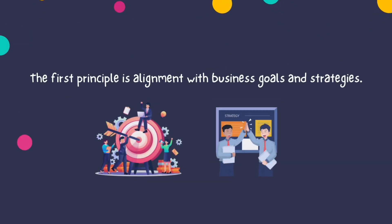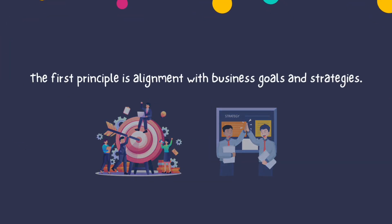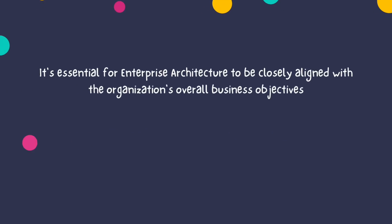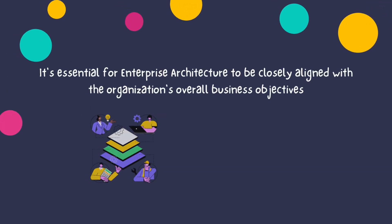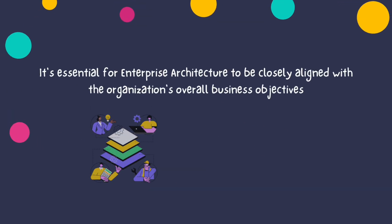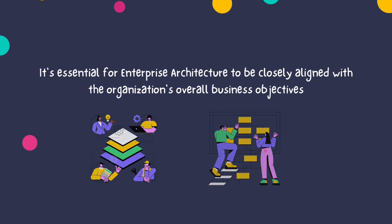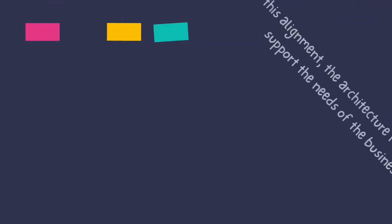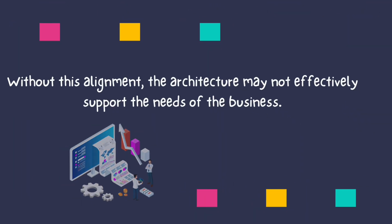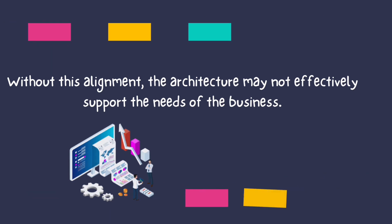The first principle is alignment with business goals and strategies. It's essential for Enterprise Architecture to be closely aligned with the organization's overall business objectives. Without this alignment, the architecture may not effectively support the needs of the business.